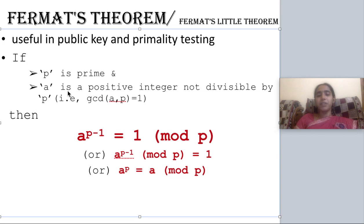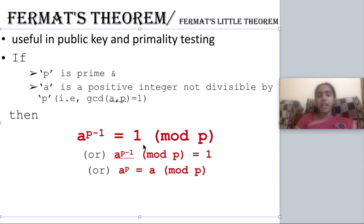So what is Fermat's Theorem actually? Fermat's Theorem states that A power P minus 1 is equal to 1 mod P. You can also move the modulus P to get: A power (P minus 1) mod P equals 1. You can write the theorem in various forms like that.